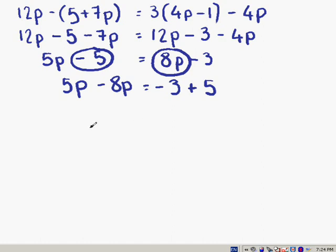So we have 5p minus 8p equals minus 3 plus 5. 5p minus 8p is minus 3p, and minus 3 plus 5 is 2.